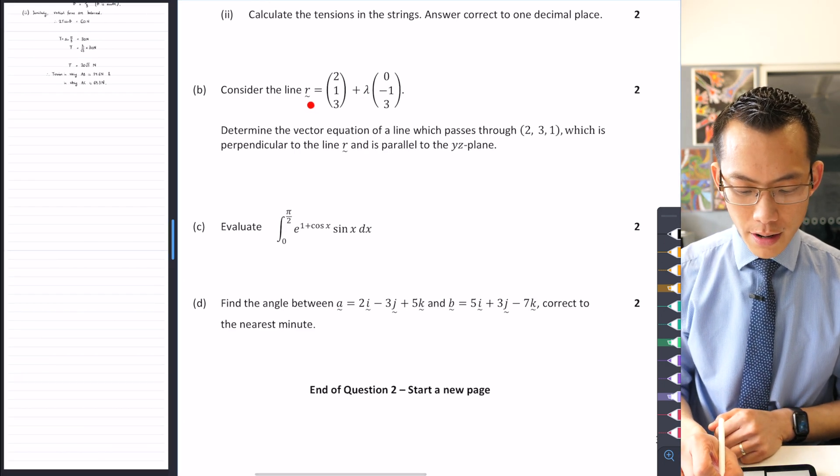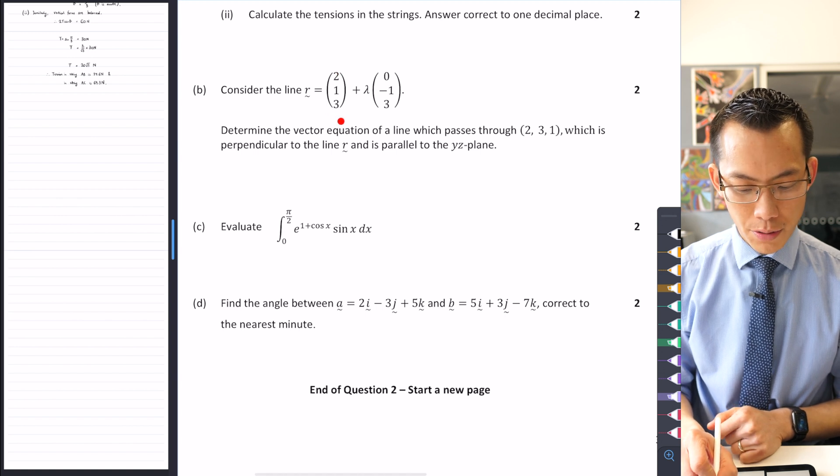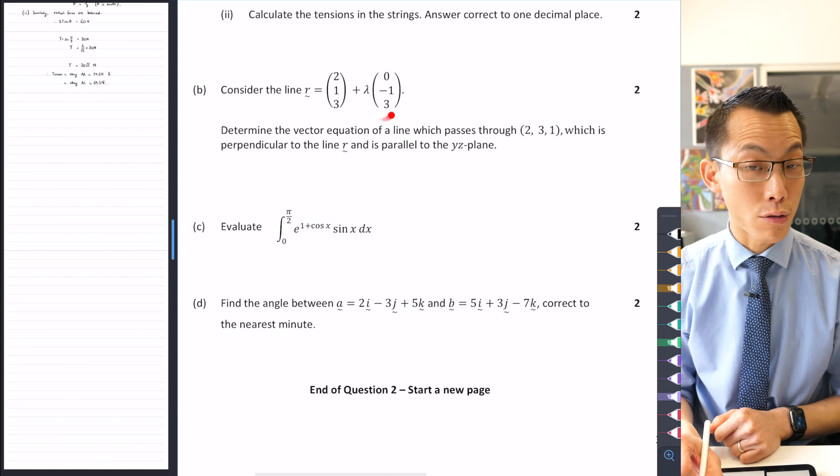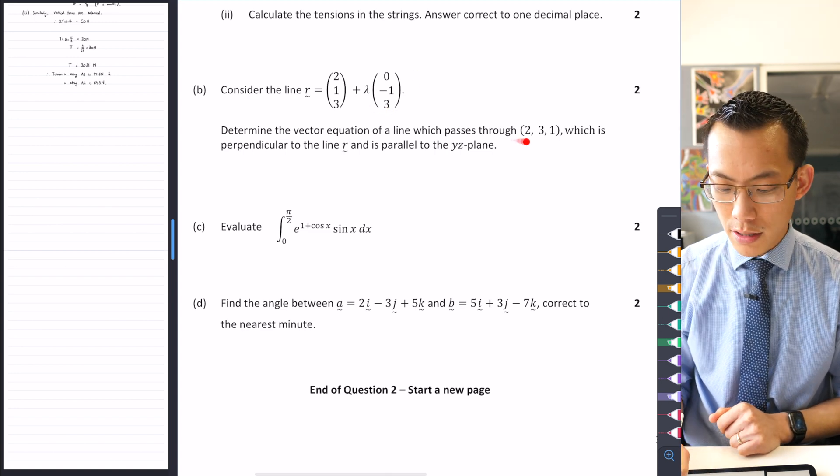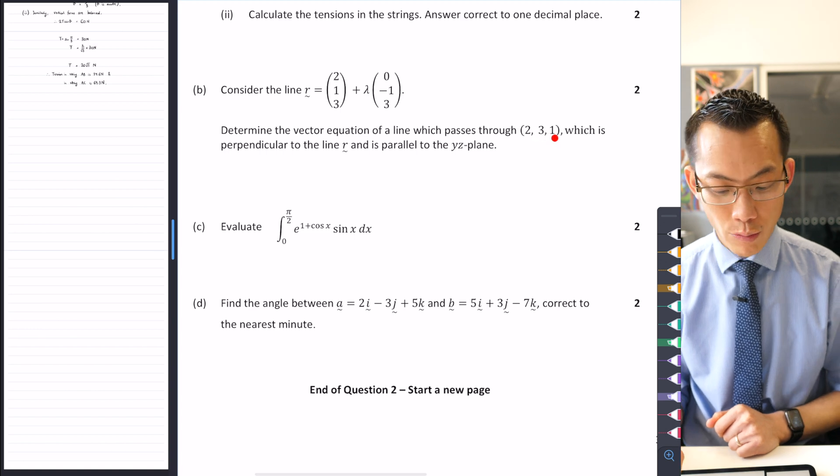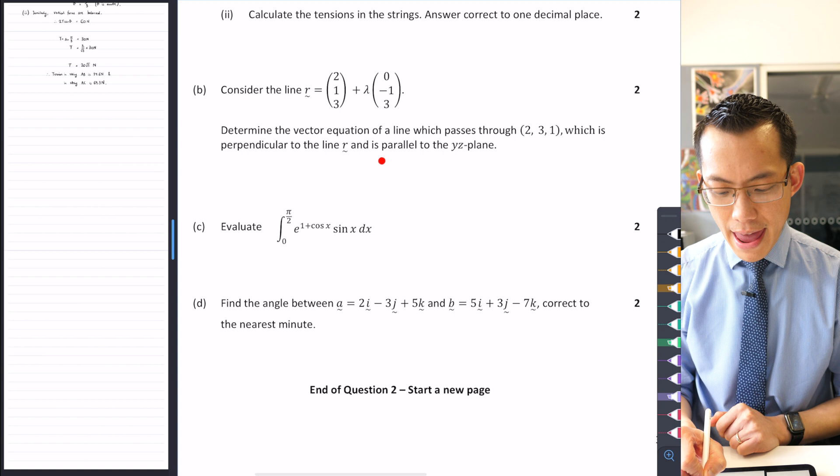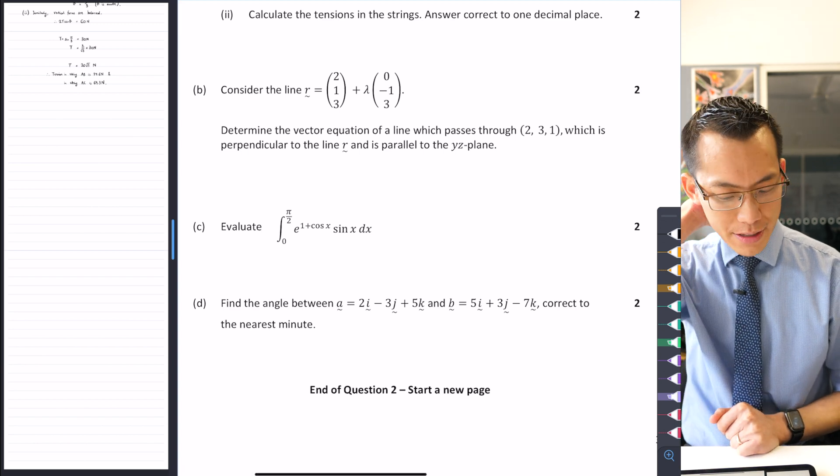Consider the line r equals position vector 2, 1, 3 plus lambda of 0, negative 1, 3, there's the direction. Determine the vector equation of a line which passes through this point 2, 3, 1, which is perpendicular to the line above and parallel to the yz plane.